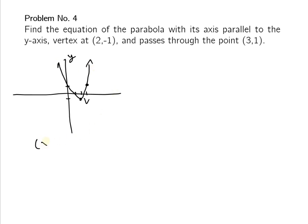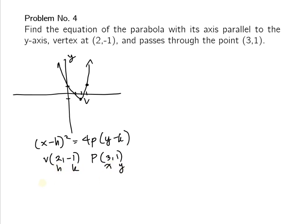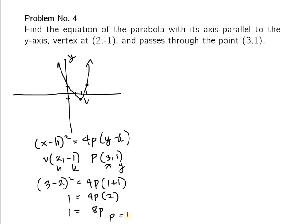Using the same process as problem 3, we substitute the point (3, 1) and vertex (2, -1): h = 2, k = -1, x = 3, y = 1. So (3 - 2)² = 4p(1 - (-1)), giving 1² = 4p(2), so 1 = 8p. Therefore p = 1/8.